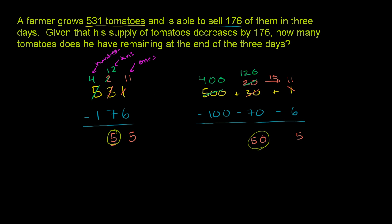Then finally, we're in the hundreds place. 400 minus 100 is 300. 4 minus 1 is 3. But this 3 represents 300. This 5 represents 50. This 5 represents 5. And so we're done.